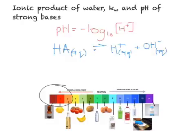We also know from GCSE that strong bases have pHs between 12 and 14. So now we need to know how to calculate the pHs of those proton acceptors.